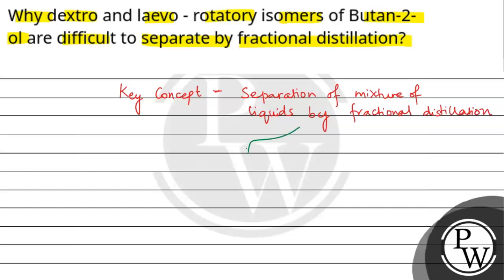Fractional distillation specifically separates miscible liquids with a boiling point difference of less than 25 degrees Celsius or 25 Kelvin or less.